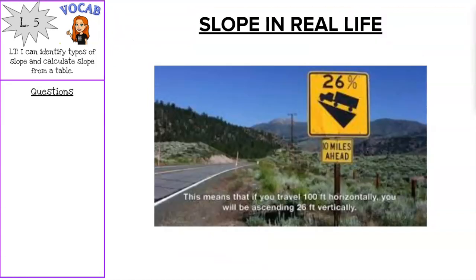So then we have slope in real life. If you've ever seen a sign that looks like this on a road, it just tells you the percentage or the slope, because slope can be written as a percentage, of the hill coming up. Certain trucks can't go up or down hills if they're too heavy and the road is too steep. So it's marking signs letting you know how steep the road is coming up. You'll see a lot of those in the mountains.